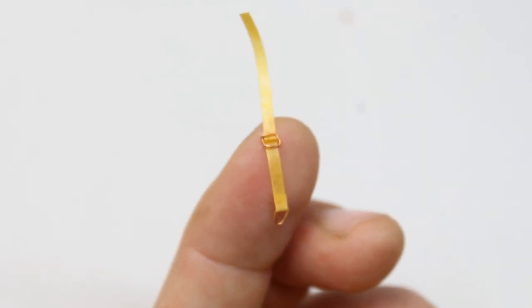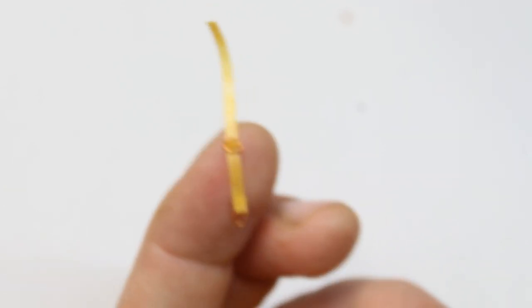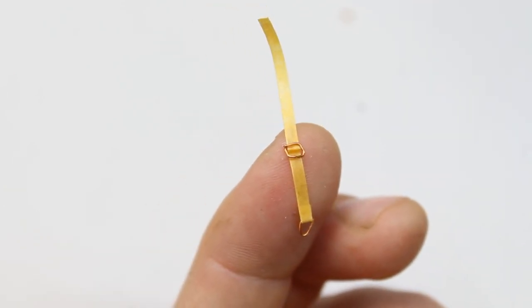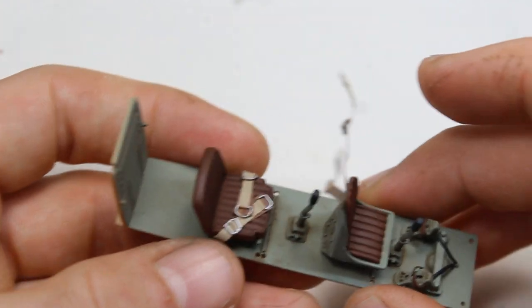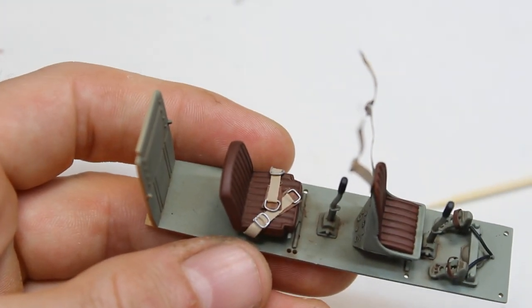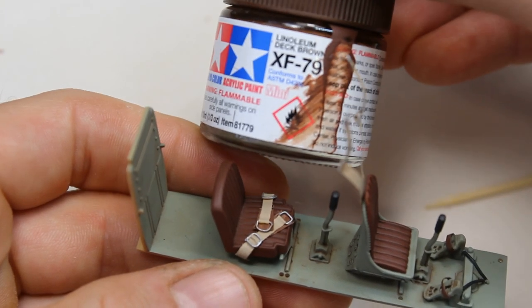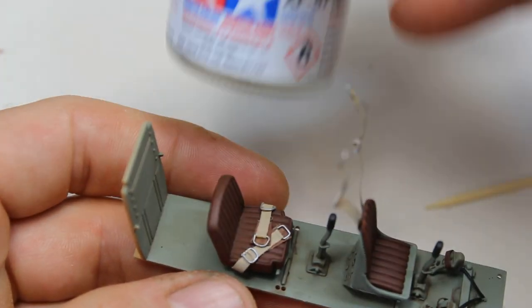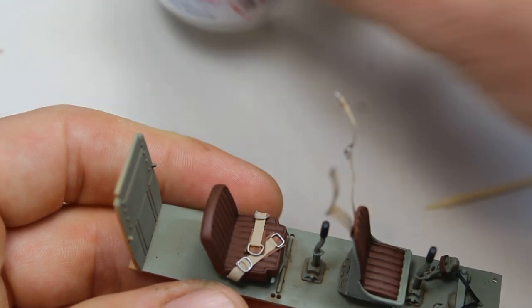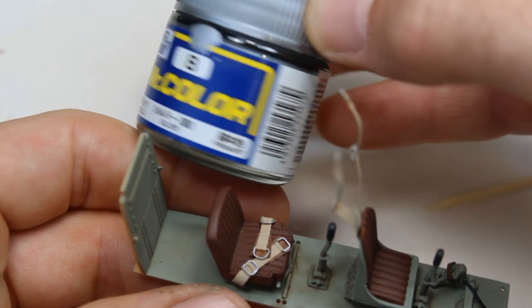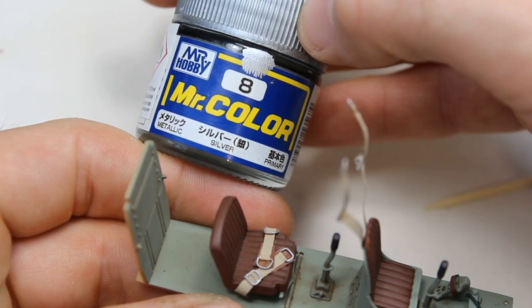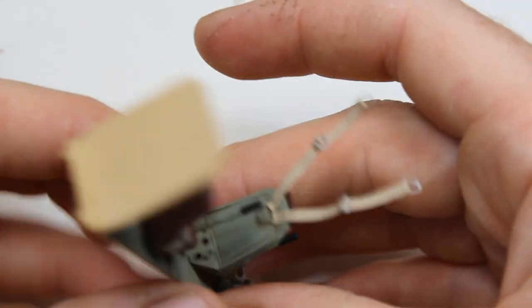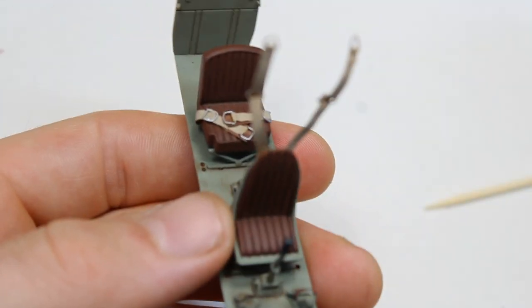I've actually skipped the painting stage because there wasn't a lot to it. They were sprayed with XF-57 Buff, and then I picked out the leather parts—that's the bits on the lap harnesses—with XF-79. There's the buff color that they were sprayed to give them a kind of textile look.